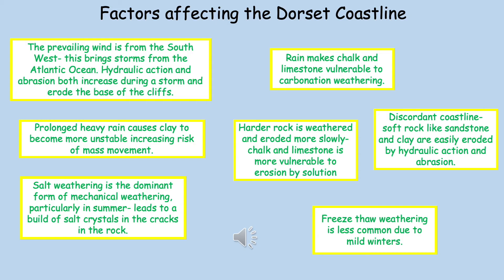Rain also makes chalk and limestone vulnerable to weathering processes such as carbonation weathering. Salt weathering is a dominant form of mechanical weathering, occurring particularly in summer, leading to the build-up of salt crystals in cracks in the rock which can cause rock to break apart. Hard rock is weathered more slowly, though chalk and limestone are more vulnerable to erosion by solution. Along this discordant coastline, soft rocks like sandstone and clay are easily eroded by hydraulic action and abrasion, particularly during stormy weather. Freeze-thaw weathering is less common as the Dorset coastline is located in the south of the UK, but it can occur during particularly cold winters.